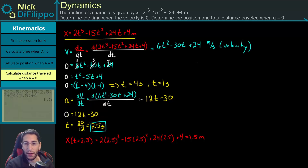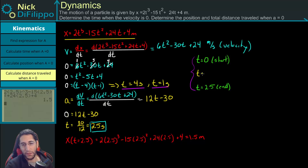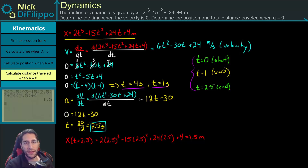Now we look at total distance traveled. We need a start point, so we start at t = 0 and end at t = 2.5. We must check for any times between 0 and 2.5 where velocity equals zero — that's t = 1 second. At t = 1, velocity equals zero, meaning the particle changes direction from positive to negative, so we need to account for the backtracking in our total distance.